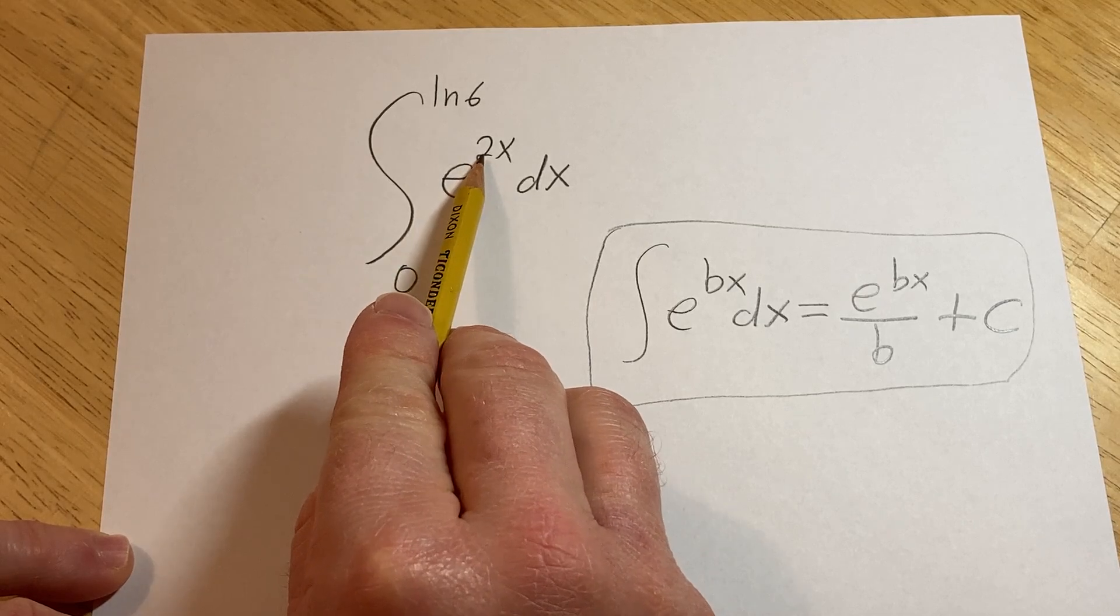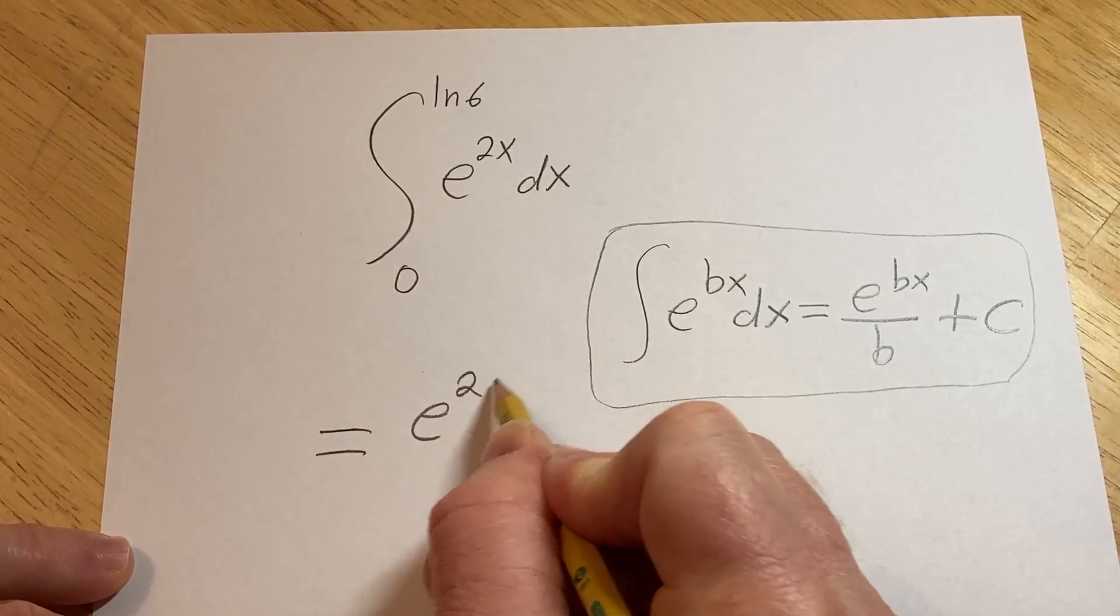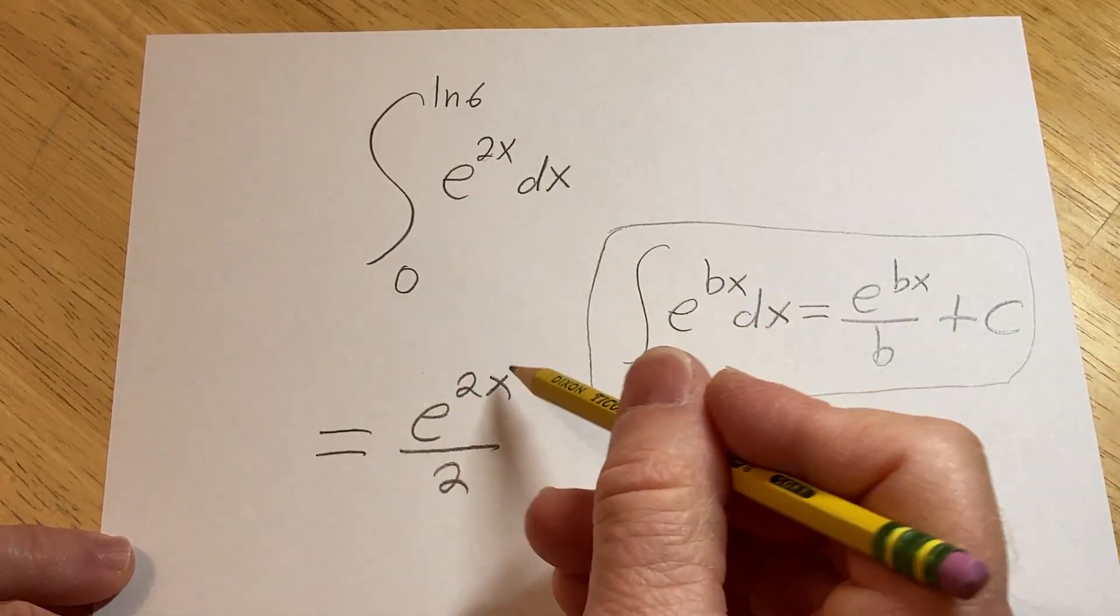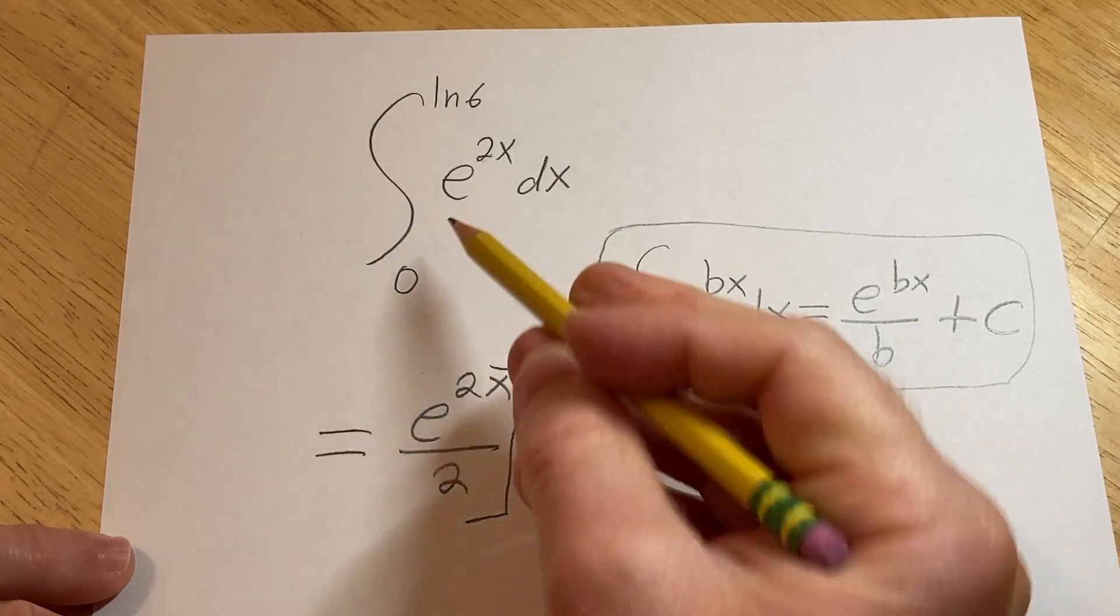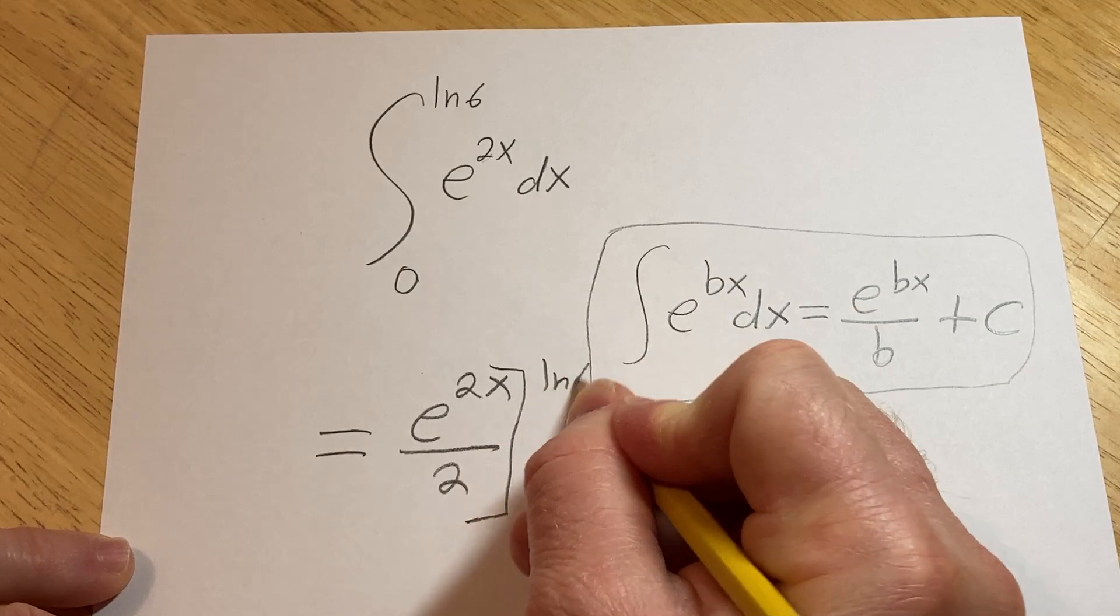Okay, so in our example, the b is 2. So this is actually simply equal to e to the 2x over 2, just like that. You just divide by the 2, and then you have the bracket here. And we're going from 0 to the natural log of 6, so 0 ln 6.